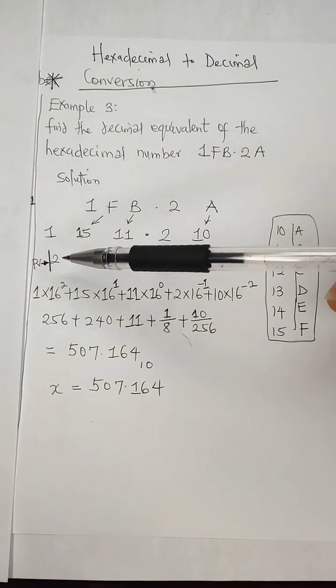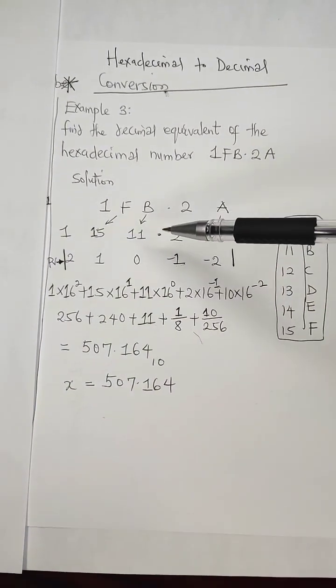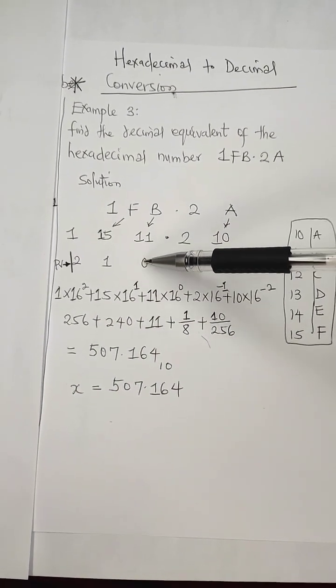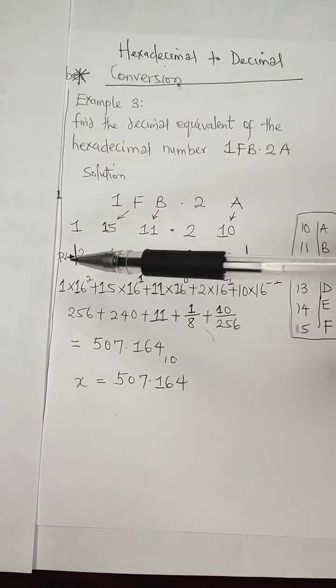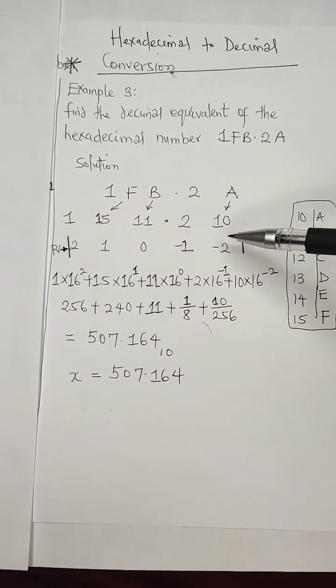The next thing to consider is the place value. From this decimal point, we'll have the place values to be 0, 1, 2, and on the other side, minus 1 and minus 2.